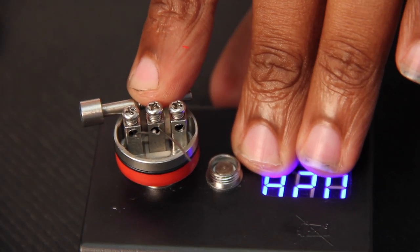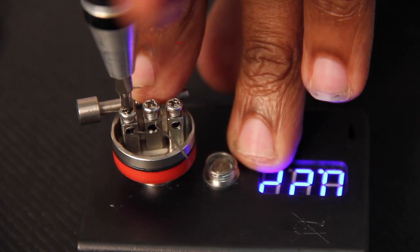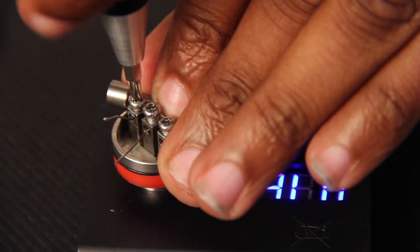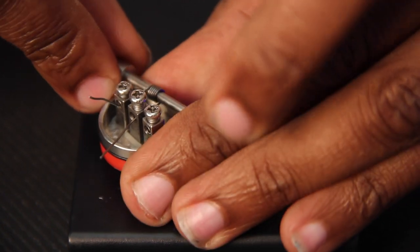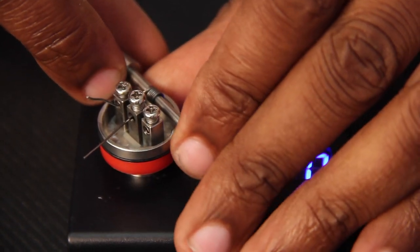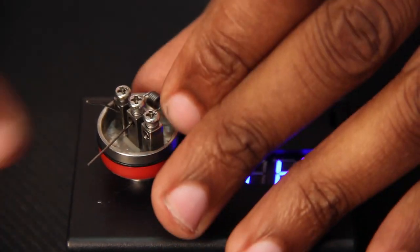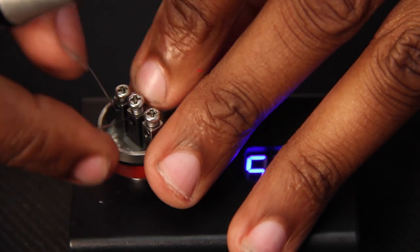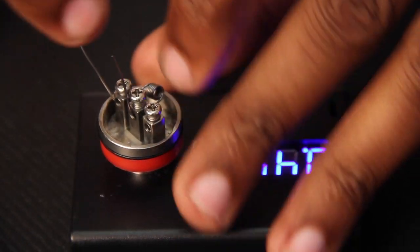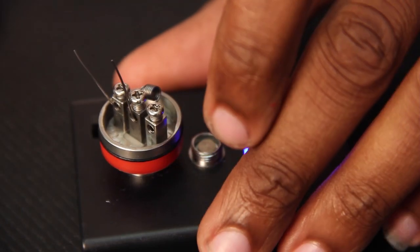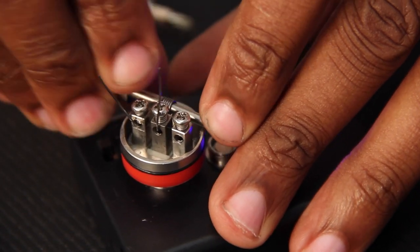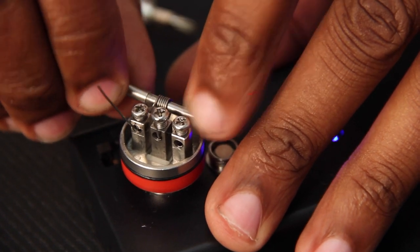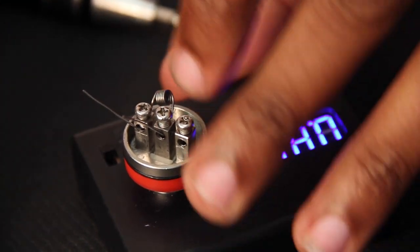All right. So when you're doing a dual coil build on a three post RDA, what you always want to do is you want to leave that center post. You don't want to tighten down the screw on the center post because you're going to be feeding another wire through that hole, but you want to tighten down your negative post. And then what I also like to do is I bend up the lead that's in my center. That way it's not going to get in the way when I'm feeding in my other coil.